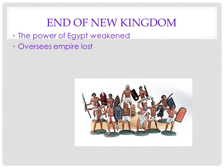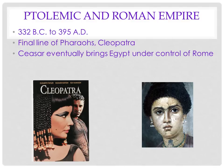Then came the end of the New Kingdom — the power of Egypt was weakened and overseas empires were lost. After that, you had the Ptolemaic period and the Roman period. Cleopatra is thought to be the last of the pharaohs, and eventually Caesar brought Egypt under the control of Rome.